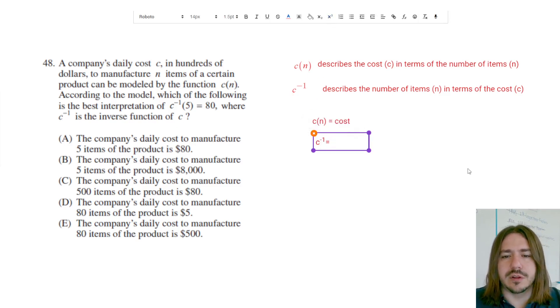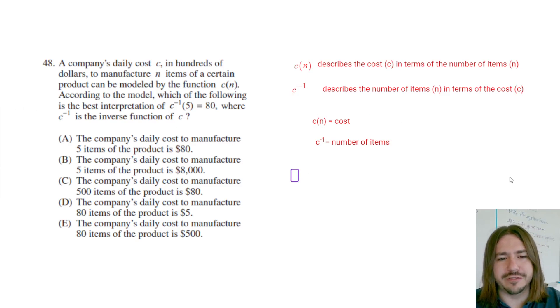When I'm looking at this statement, this C^(-1)(5) = 80, what this is really saying is that the 5 is the cost and the 80 is the number of items.